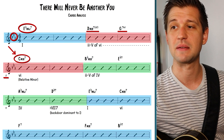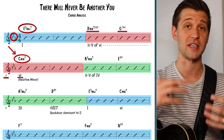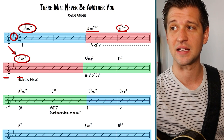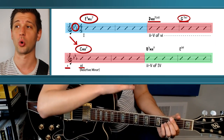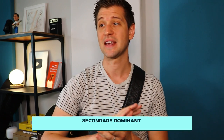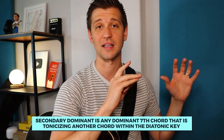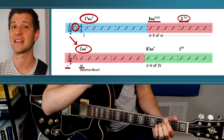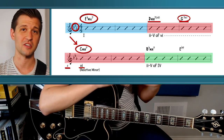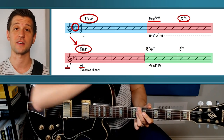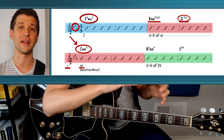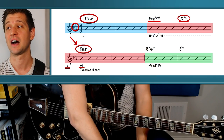The C minor seven is the sixth chord of the major key E flat major. A secondary dominant is the G seventh chord — by definition, it's any dominant seventh chord that is tonicizing another chord within the diatonic key center. G seven isn't in the key of E flat major, but it's serving a purpose to make the ear sound as if C minor seven is a new one chord, even though it's technically the sixth chord within E flat major. Secondary dominants tonicize another diatonic chord, making it sound like a new tonal center, at least momentarily.